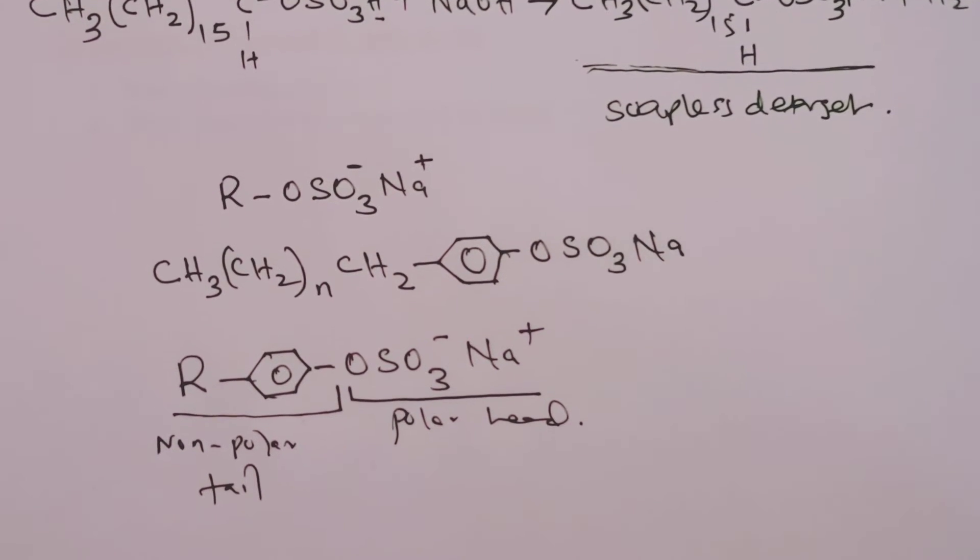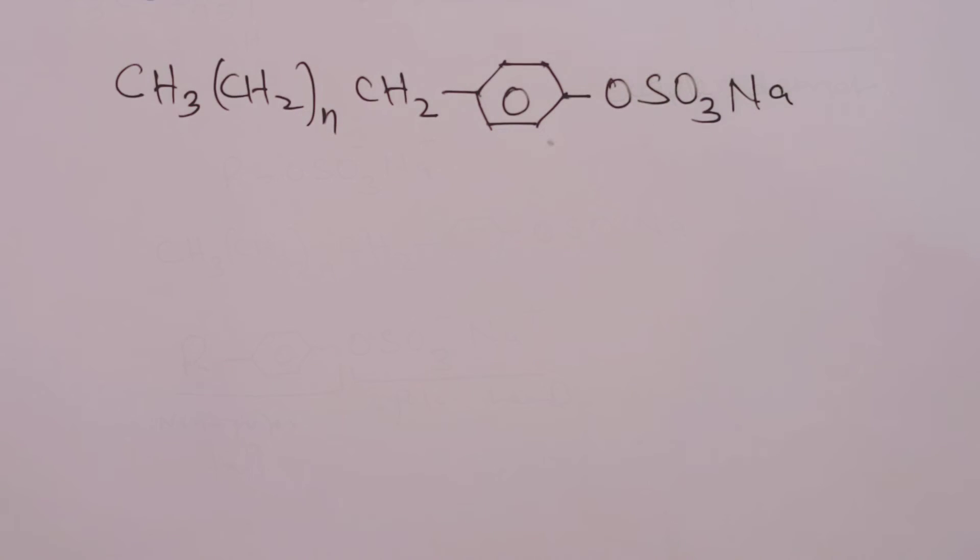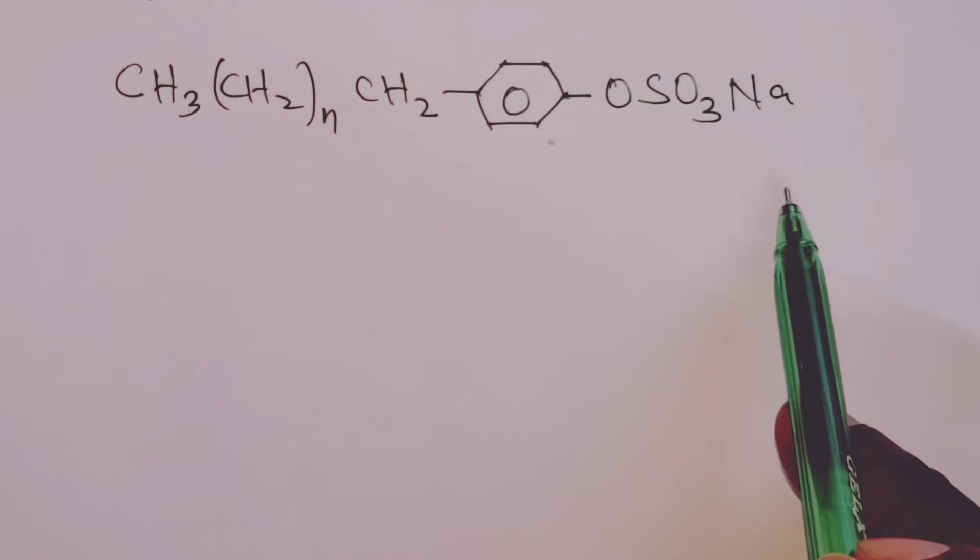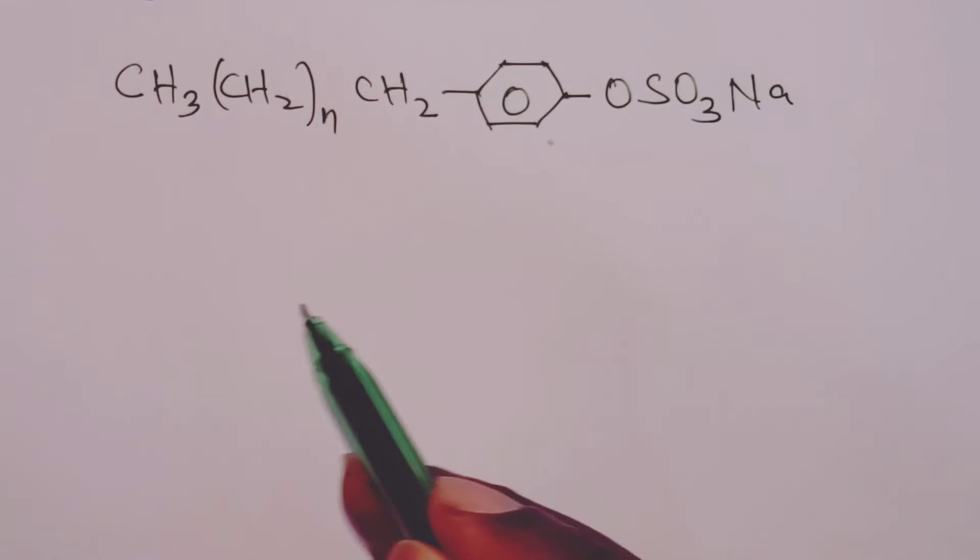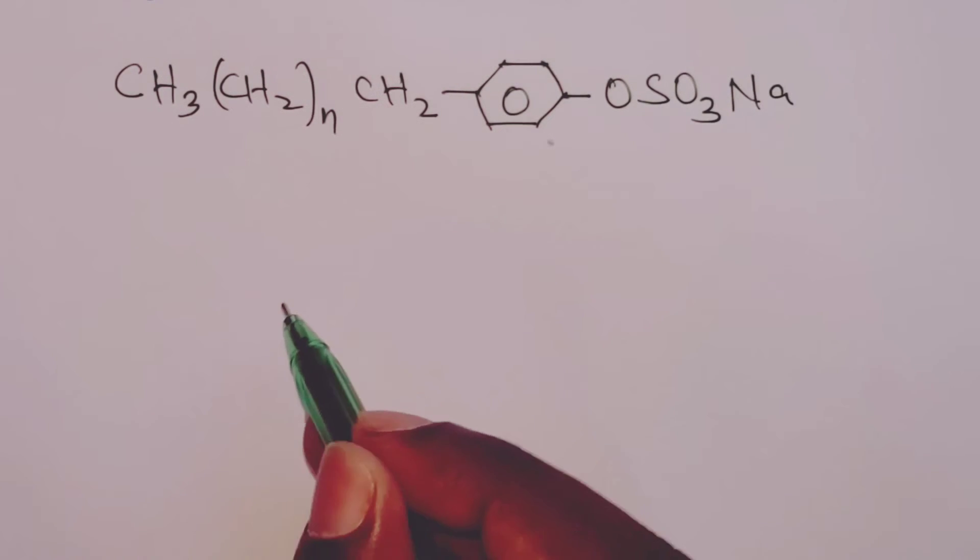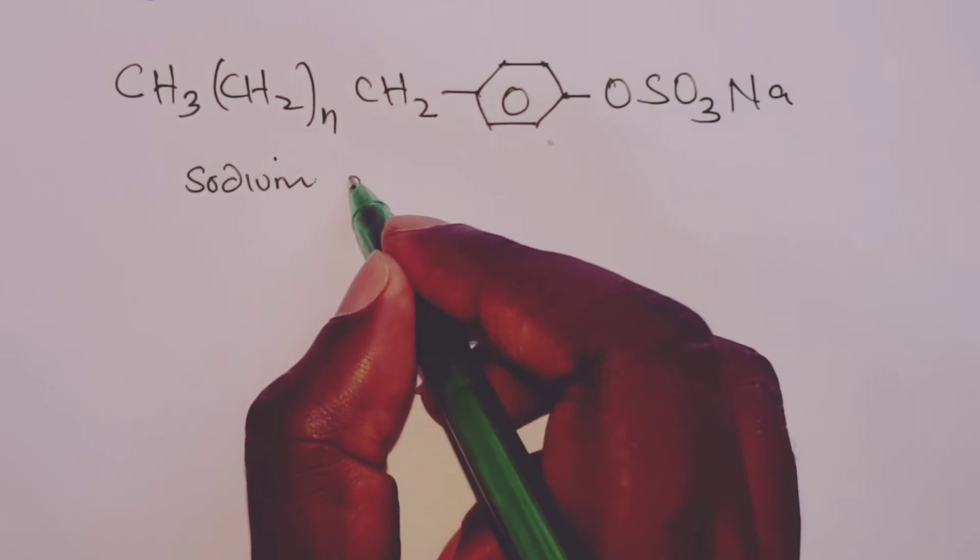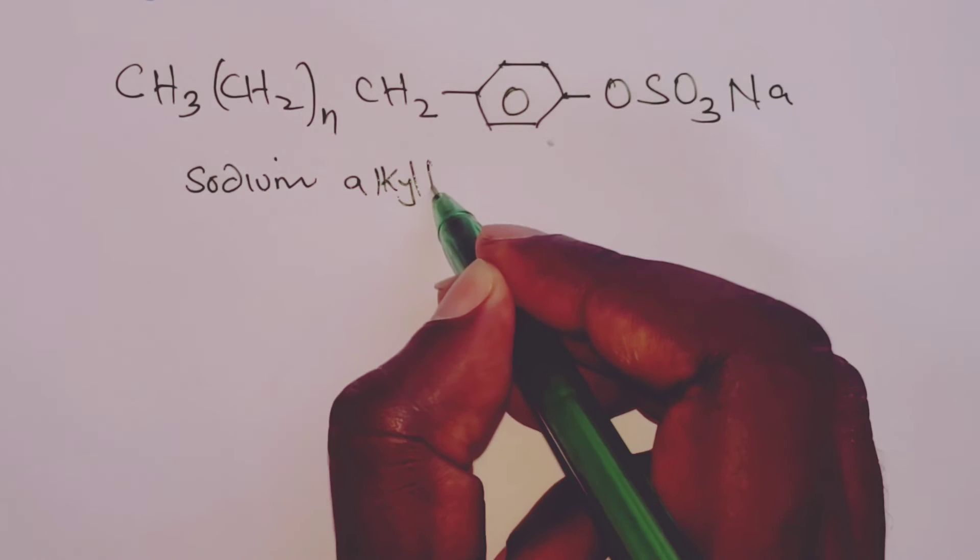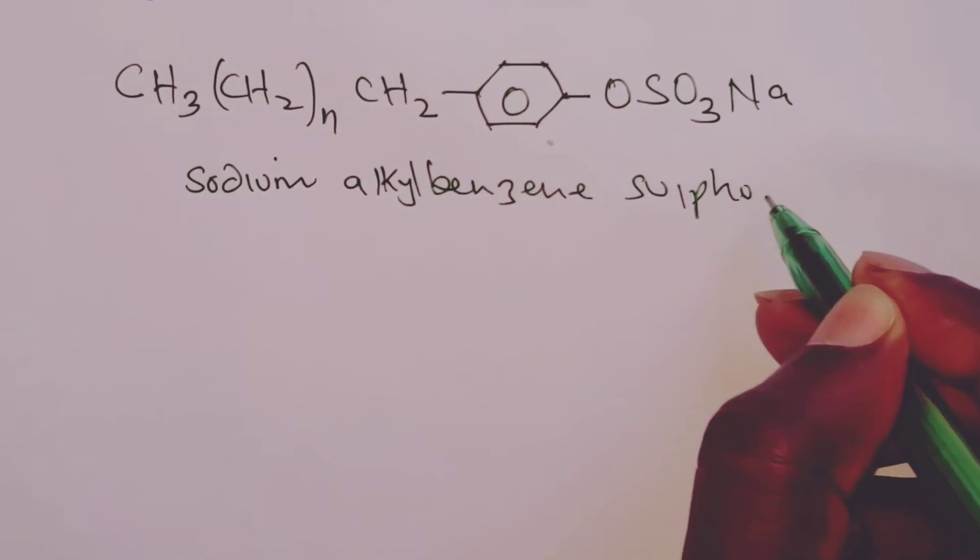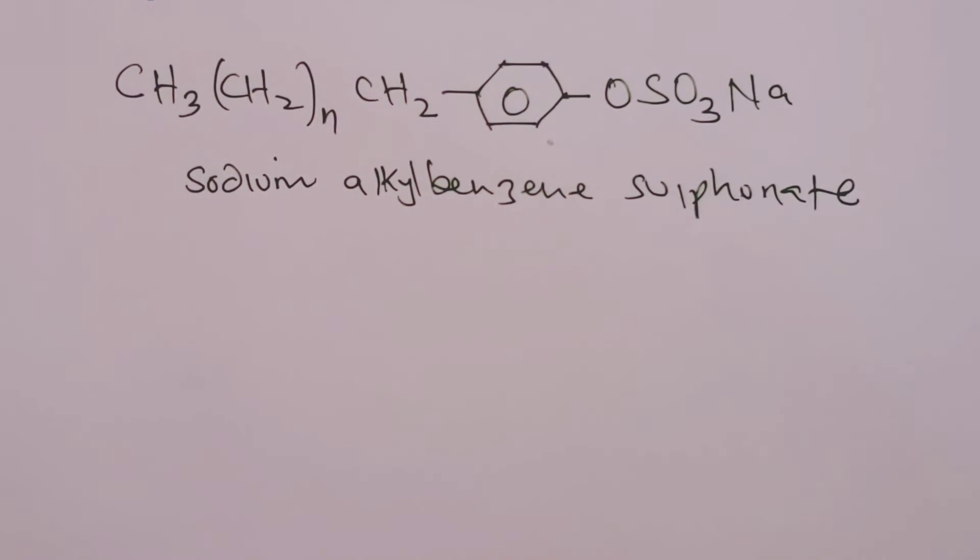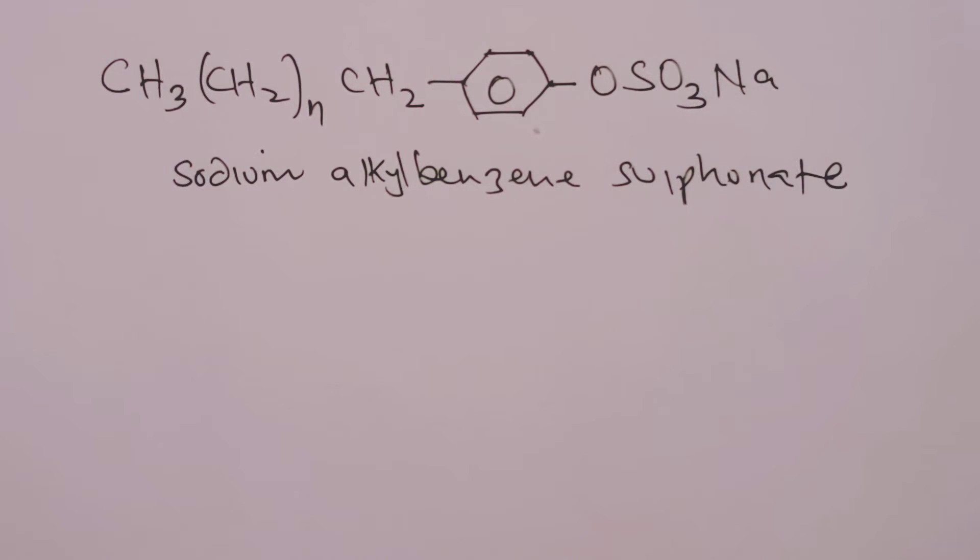Much about mode of action shall be discussed later on. Now, this structure here that makes most commercial detergents, as we have just discussed, has a name. It is called sodium alkyl benzene sulfonate. So this is what we have in most commercial detergents.